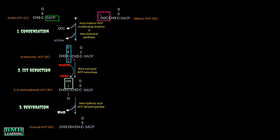And then we have the final reaction of the round, which is the second reduction. So that means we are going to use one more NADPH, and that will be converted into NADP positive. The product we are getting here is four-carbon butyryl-ACP. The reaction is catalyzed by the enzyme enoyl-ACP reductase.